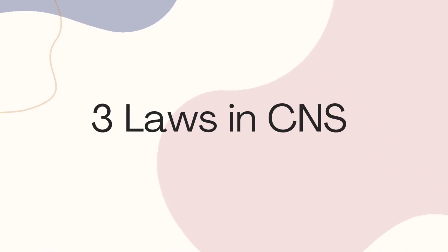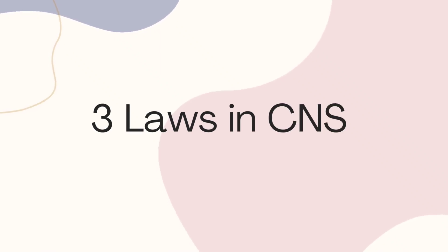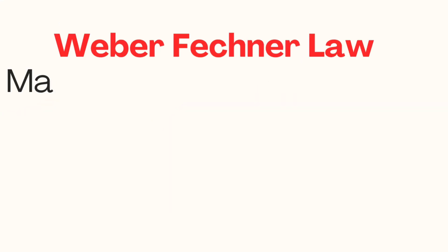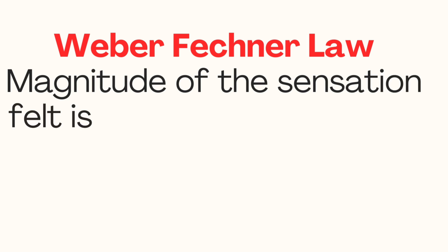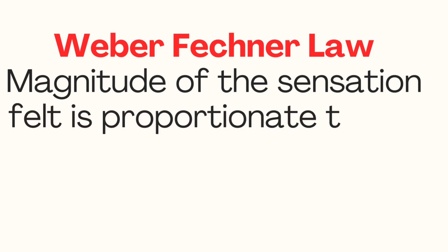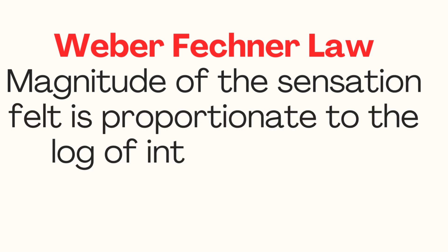In this video, let's study the three laws in the central nervous system. The first is called the Weber-Fechner law, which states that the magnitude of the sensation felt is proportionate to the log of the intensity of the stimulus.